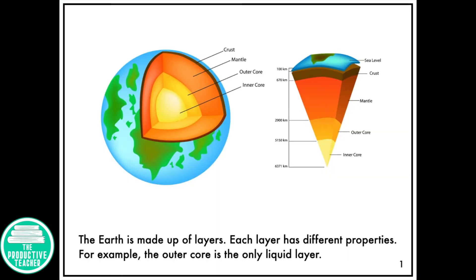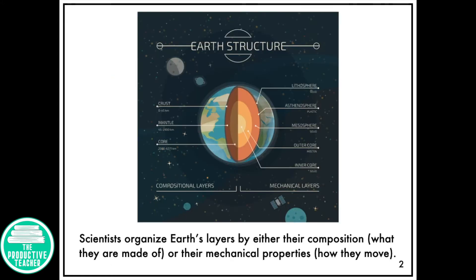The Earth is made up of layers, and each layer has different properties. For example, the outer core is the only liquid layer. Scientists organize Earth's layers by either their composition or their mechanical properties.